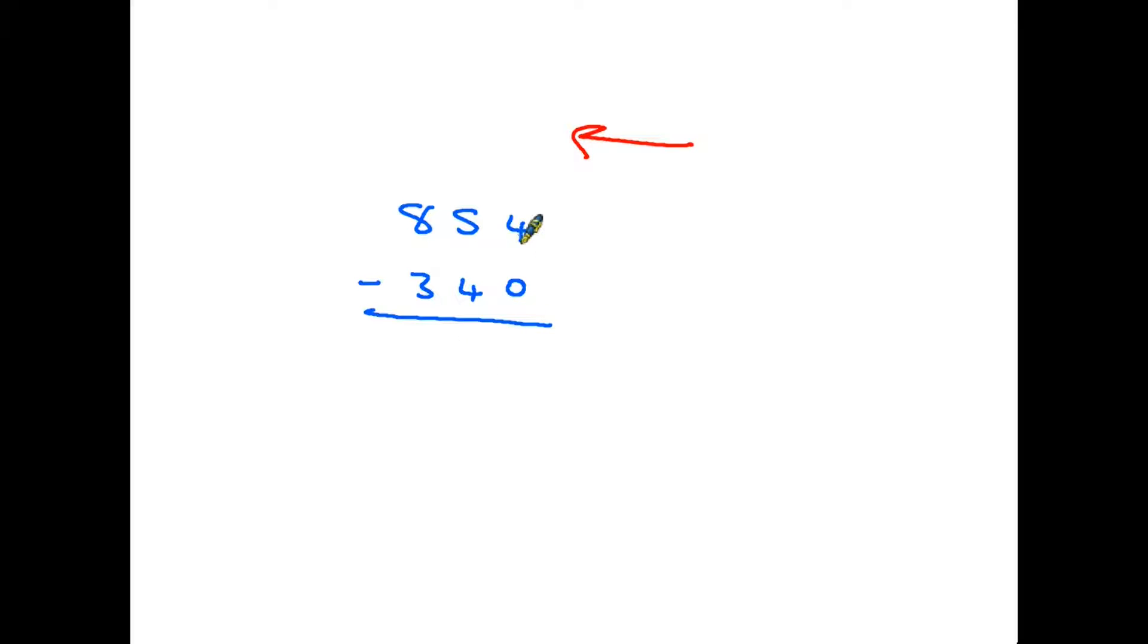So the first thing we're going to do is say four take away zero. Remember, we are always taking the bottom row from the top. We can never do it the other way around.